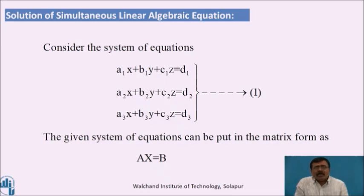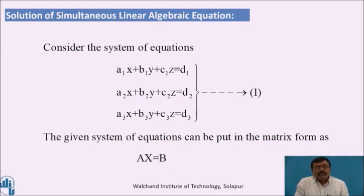Solution of simultaneous linear algebraic equations. Consider the system of equations: a1x plus b1y plus c1z equals d1, a2x plus b2y plus c2z equals d2, a3x plus b3y plus c3z equals d3. The given system of equations can be put in the matrix form as Ax equals b, where A is the coefficient matrix, x is the column matrix, and b is the constant matrix, that is the right-hand side elements.